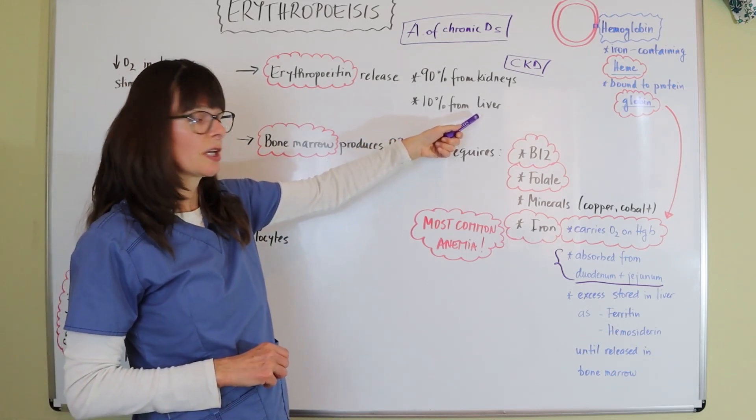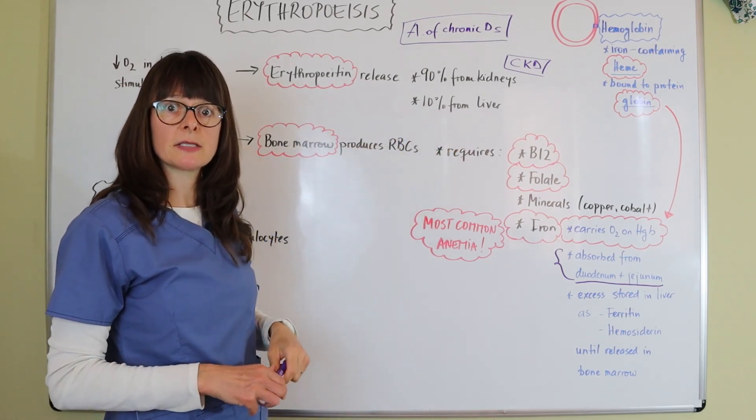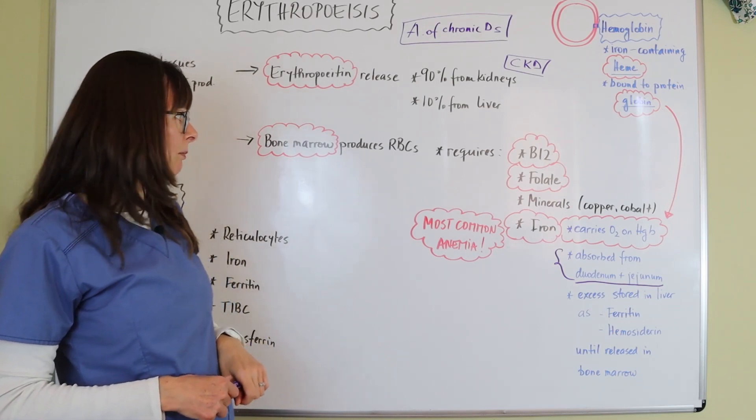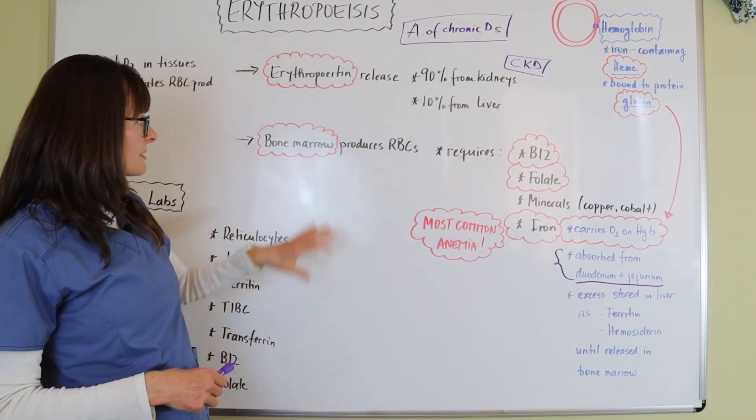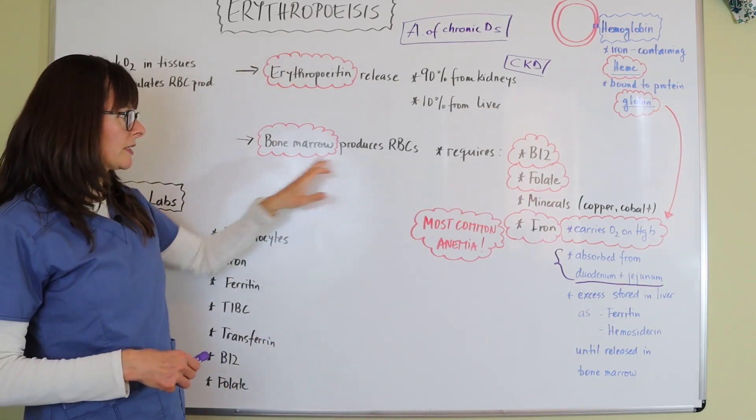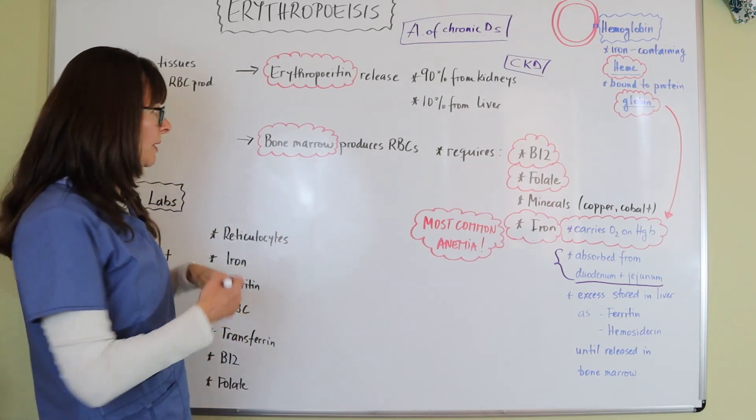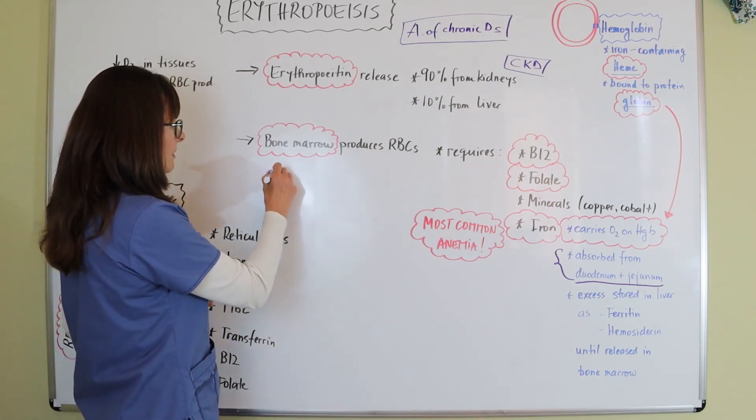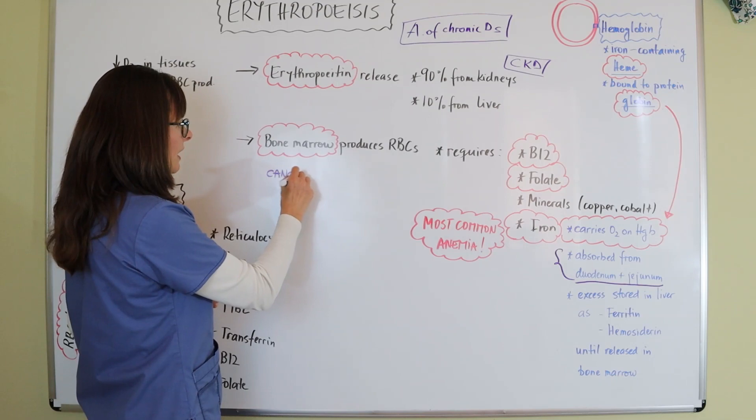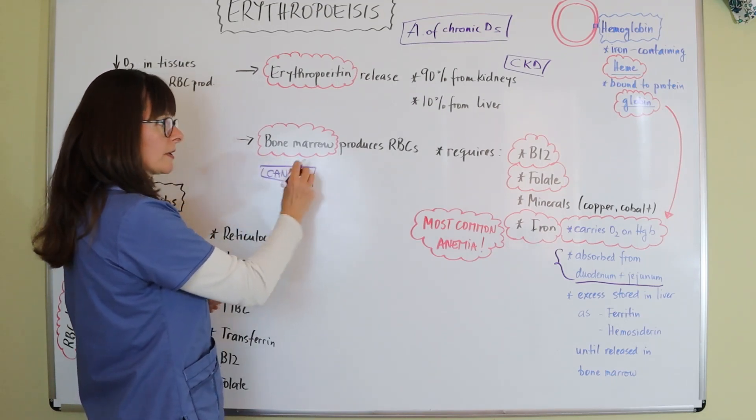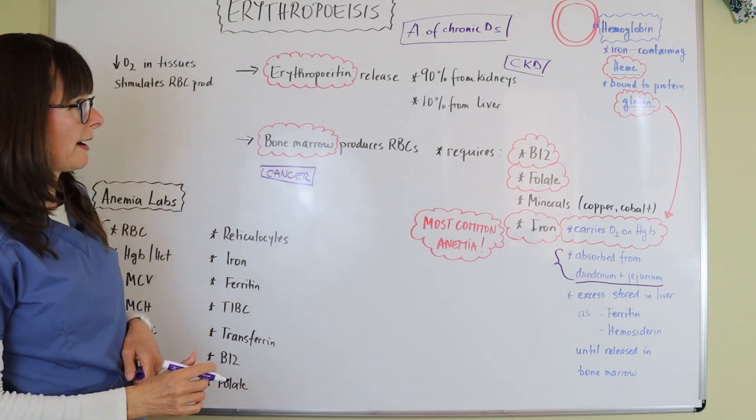Now, when we have something wrong with the bone marrow where it just can't produce these red blood cells, that usually means that we have some sort of cancer of the bone marrow. And then this whole cascade here is broken down.